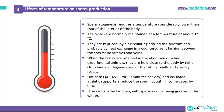The spermatogenesis process normally requires a temperature considerably lower than that of the interior of the body. The testicles maintain a temperature of about 32°C, kept cool by air circulating along the scrotum and heat exchange in a counter-current flow manner between the spermatic arteries and veins. In cases of cryptorchidism or undescended testis, retention of the testis in the abdomen causes slight degeneration of the tubular walls resulting in sterility. People who take hot pads of about 43–45°C for 30 minutes per day and insulated sportspersons show reduced sperm counts, in some cases up to 90%.